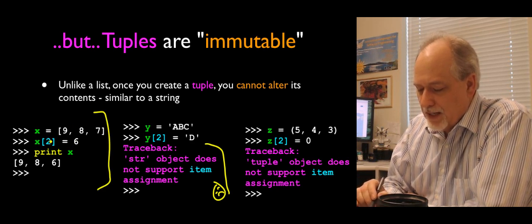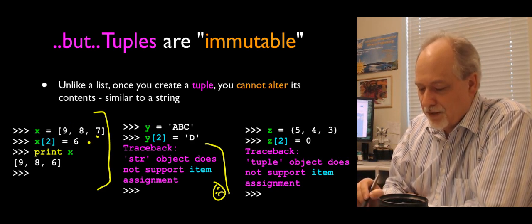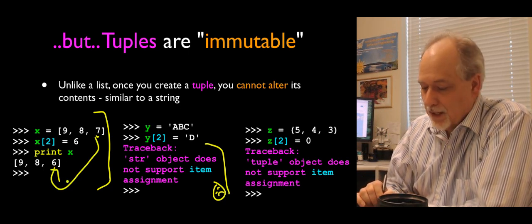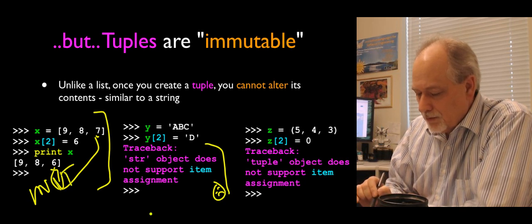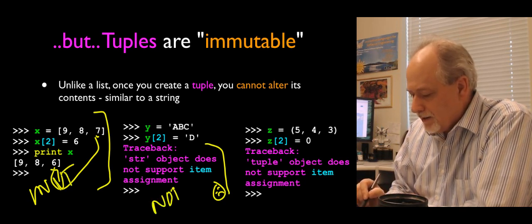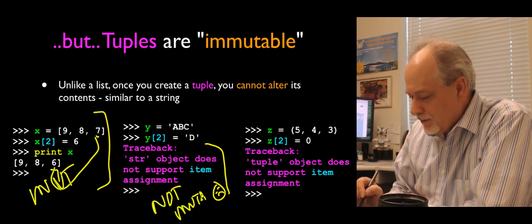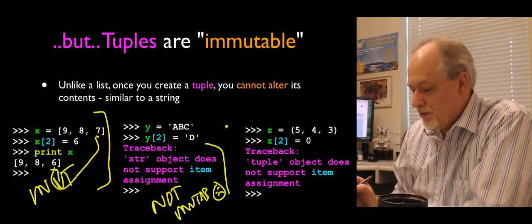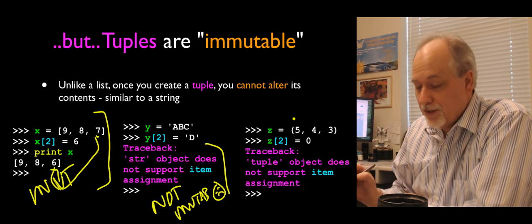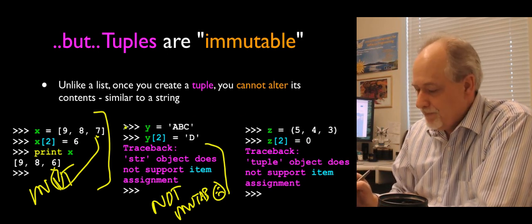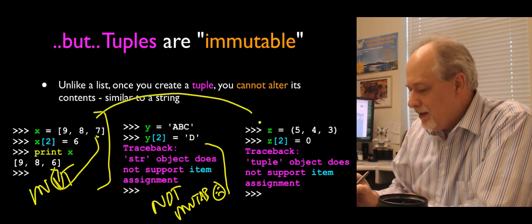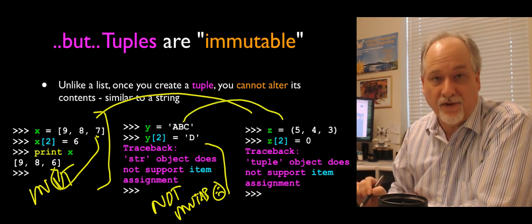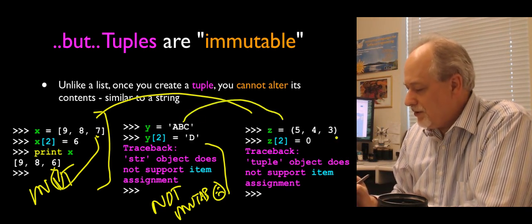But you can do it on a list. So if we have a list 9, 8, 7, and we say x sub 2 is 6, which is the third item, then the third item changes from 7 to 6. So this is mutable. This is not mutable. And tuples are also not mutable. They are like strings.